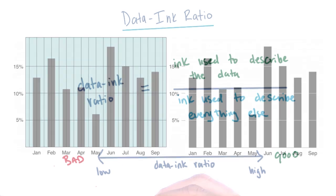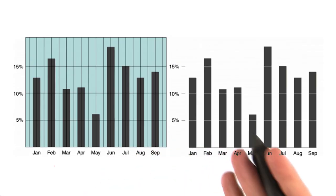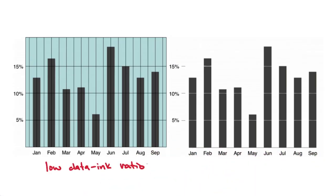Let's look at an example. Here we look at two graphs that are representing the same information. On the left-hand side, we have a visualization that has a low data-to-ink ratio. Notice the extra elements in the visualization that can be removed, such as the blue background, the horizontal and vertical grid lines, and the outer black border. This shows that a large amount of the ink used in this visualization does not directly describe the data at hand.